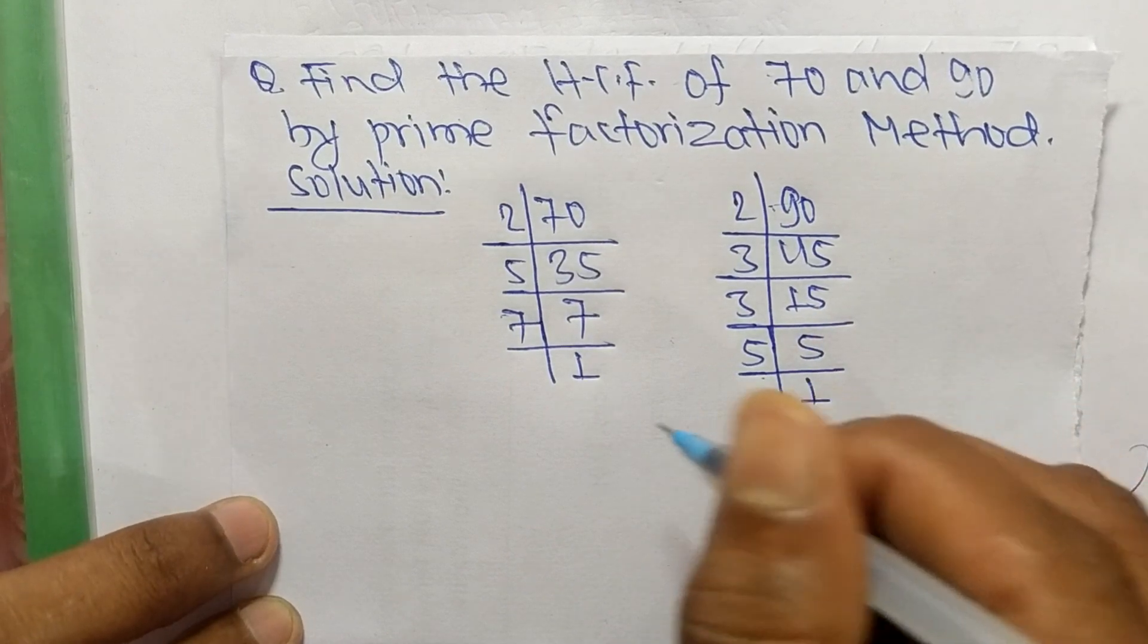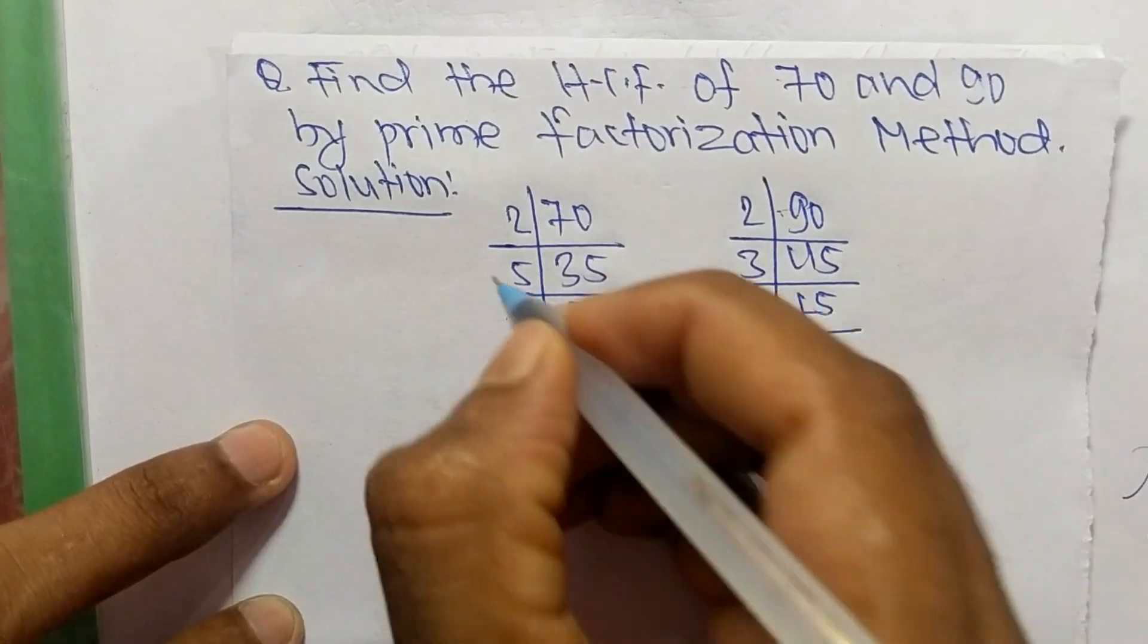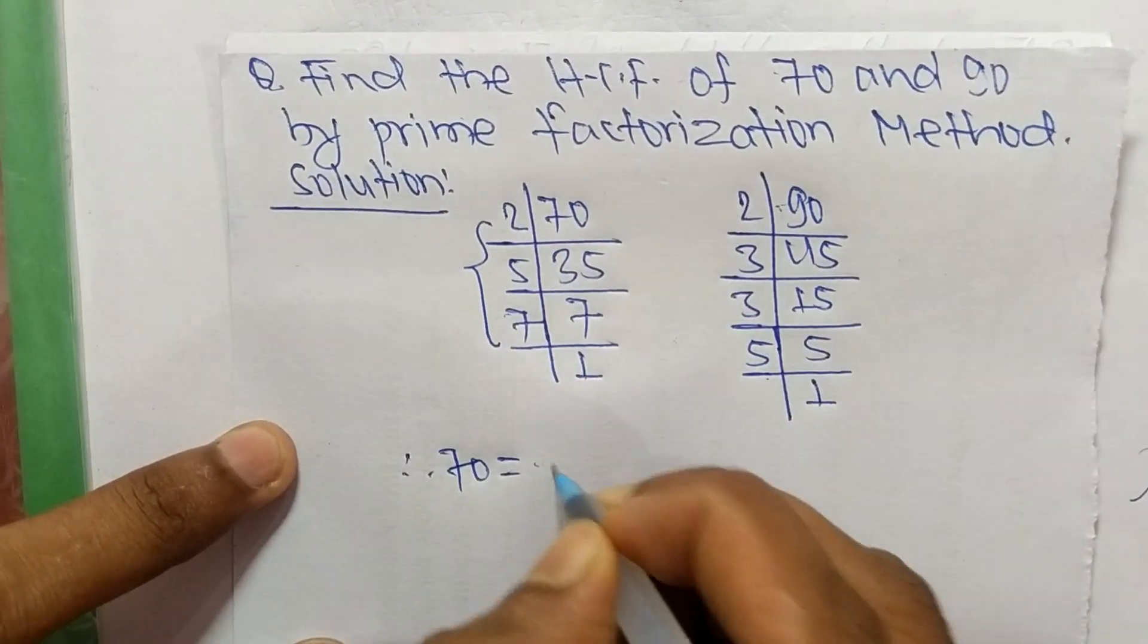So now from these prime factors we can write 70 is equal to, from this part, it is 2 times 5 times 7.